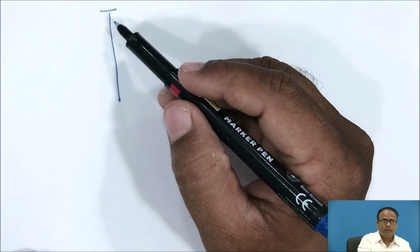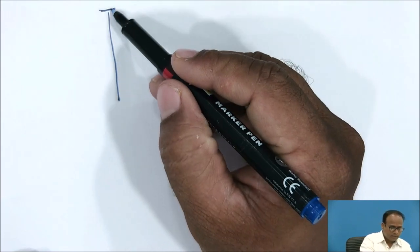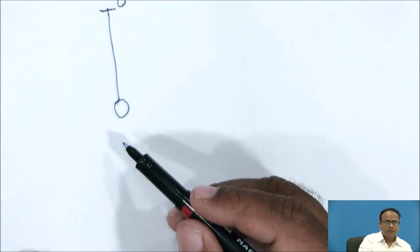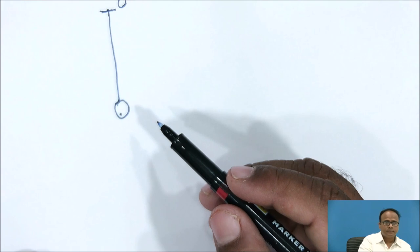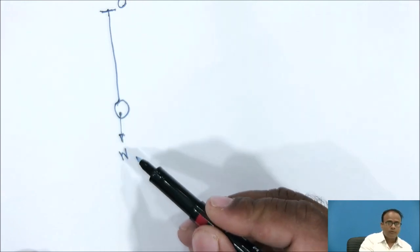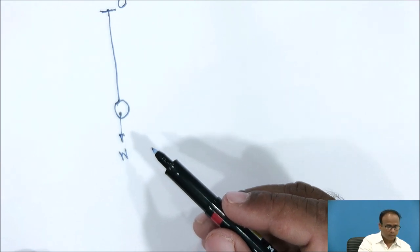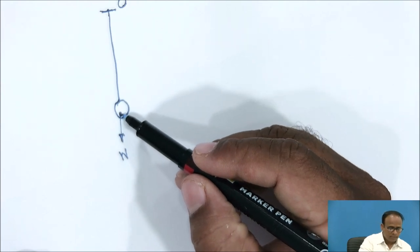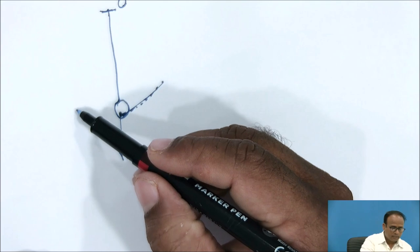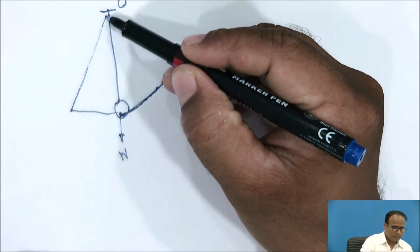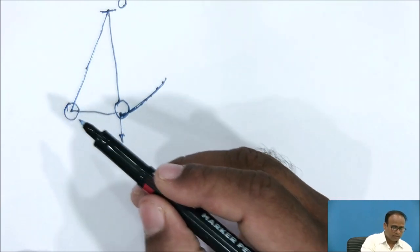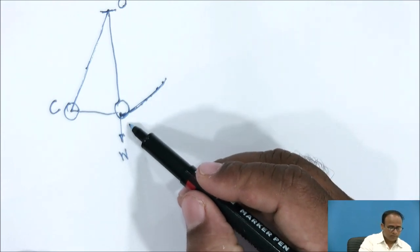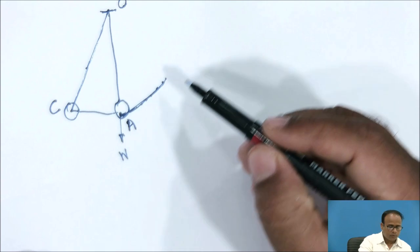Let us consider a simple pendulum suspended at point O with a string. This is a bob attached at the lower end, having weight W acting vertically downward. This pendulum oscillates — say this is a string having length L. This is position C of the string, and this is the mean position A.